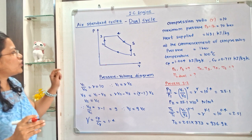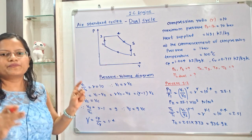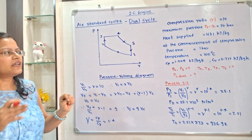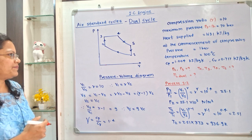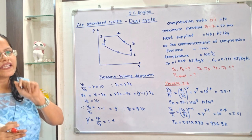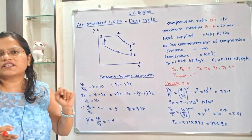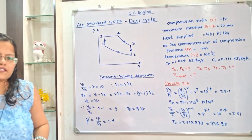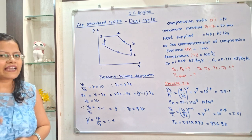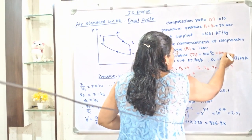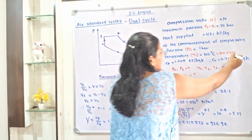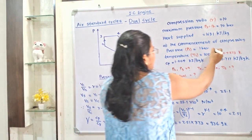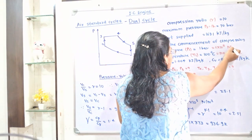Heat is supplied during processes 2 to 3 and 3 to 4 — at constant volume and constant pressure respectively — totaling 1681 kJ/kg. At the commencement of compression, point 1, P1 = 1 bar and T1 = 100°C, which we convert to Kelvin: T1 = 100 + 273 = 373 K. For calculation, P1 = 1 × 10⁵ N/m².